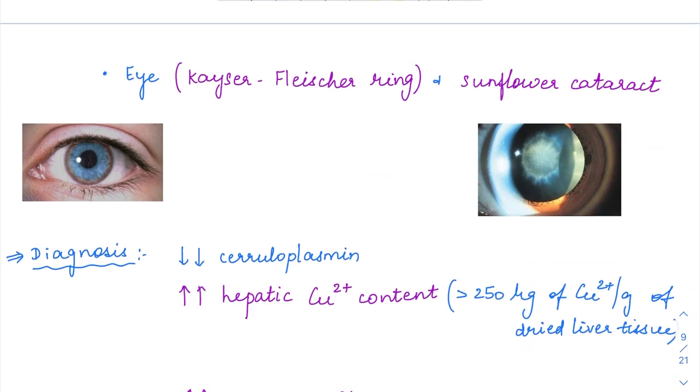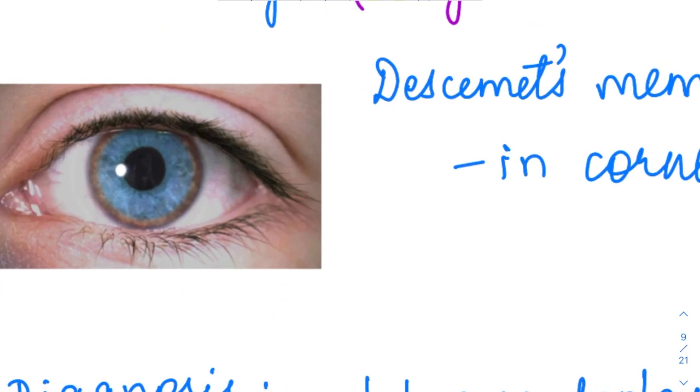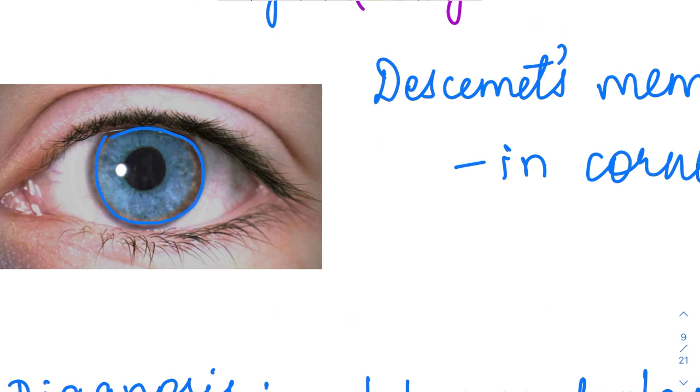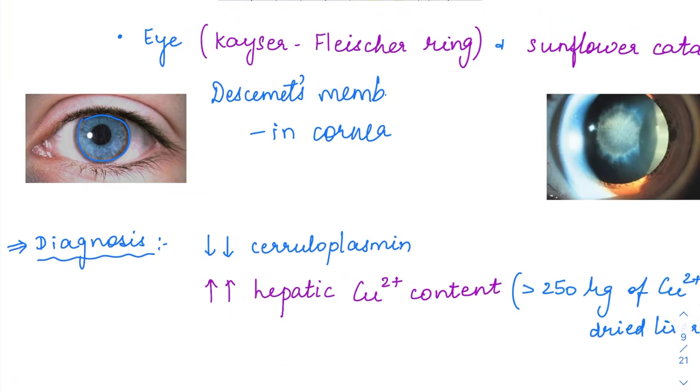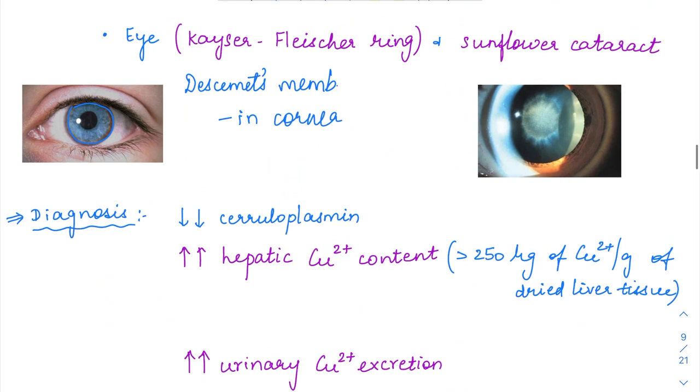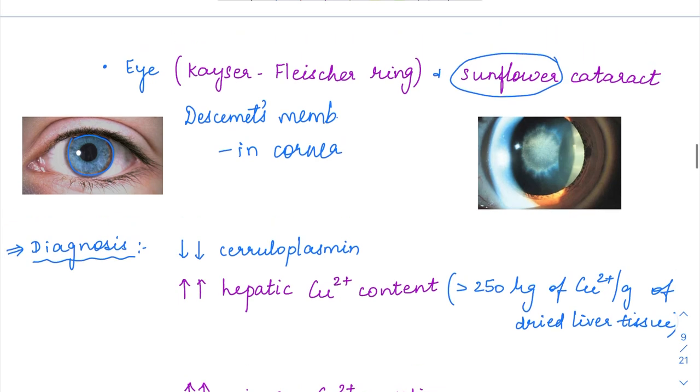Copper can also deposit in the eye with two manifestations. First is the Kayser-Fleischer ring (KF ring), which deposits in the Descemet's membrane of the cornea. This appears as a greenish-brown deposit in the eye visible on slit lamp examination. Copper is also responsible for a special type of cataract called sunflower cataract.